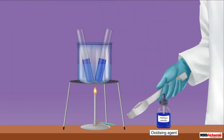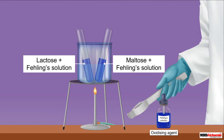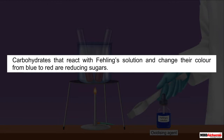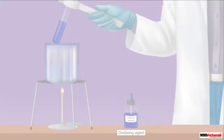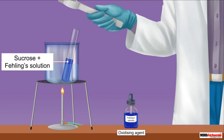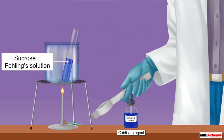Even in the case of an aqueous solution of maltose and that of lactose, the result for this reaction is the same. All such carbohydrates that react with Fehling's solution and change its color from blue to red are reducing sugars. On the other hand, when the same reaction is carried out with an aqueous solution of sucrose, the color of Fehling's solution does not change.